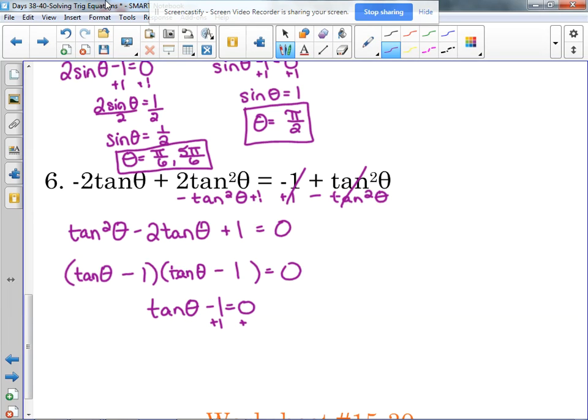Tangent of theta minus one is equal to zero, so we add the one. Where is tangent equal to one? Tangent is equal to one at pi over four and five pi over four, where sine and cosine have the exact same value and the same signs. So first quadrant and third quadrant. So this one only had two solutions.